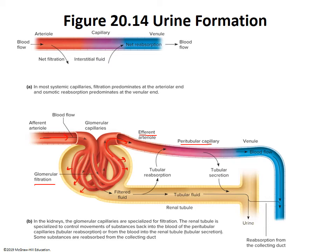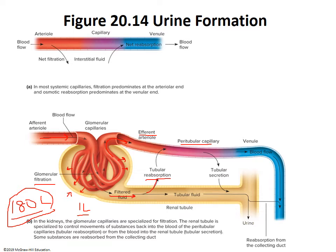About 180 liters of fluid get filtered every 24 hours. We don't urinate 180 liters — that would be terrible. We produce about a liter or a little less. So most of the water that gets filtered is reabsorbed through a process called tubular reabsorption.